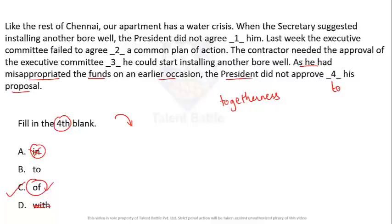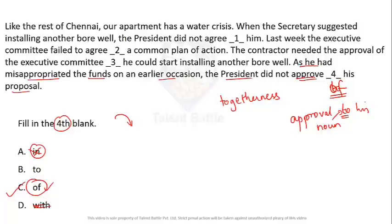The most appropriate preposition is 'of.' When we use the noun 'approval,' we can say 'give approval to his proposal.' But when we use the verb 'approve' directly, we say 'did not approve of his proposal.' So 'approve of' is the correct usage here.